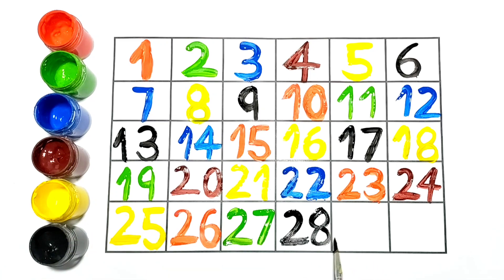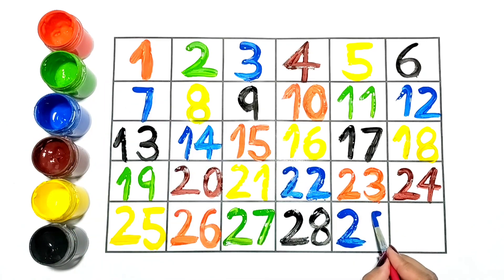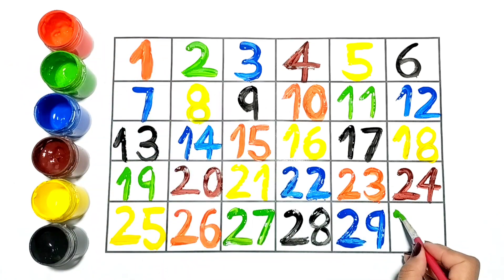Now I am writing 29. And this is 30. It is in green color.